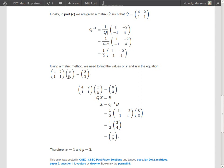So what we'll notice immediately is that this here can be written as QX equal B where Q is this matrix here, 4, 2, 1, 1. And I notice it's the same matrix that we had before. X is the column vector XY and B is the column vector containing 8 and 3.